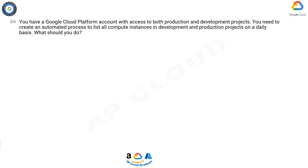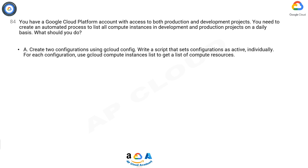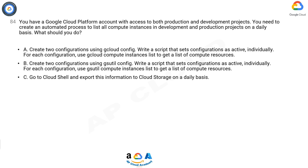A. Create two configurations using Cloud Config. Write a script that sets configurations as active, individually. For each configuration, use gcloud compute instances list to get a list of compute resources.